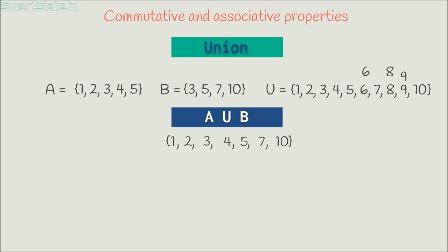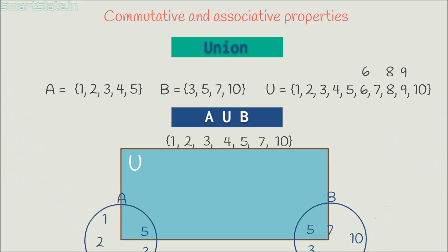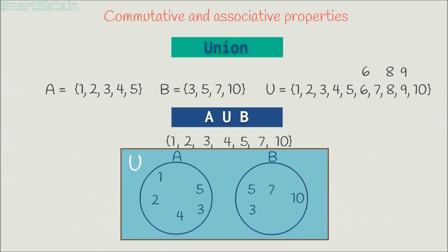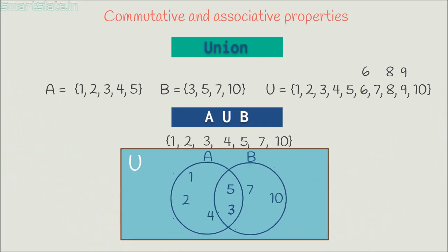Note that 6, 8 and 9 are in the universal set but not in the union of A and B, because these numbers are not present in either of the sets. This is the graphical representation of A union B.